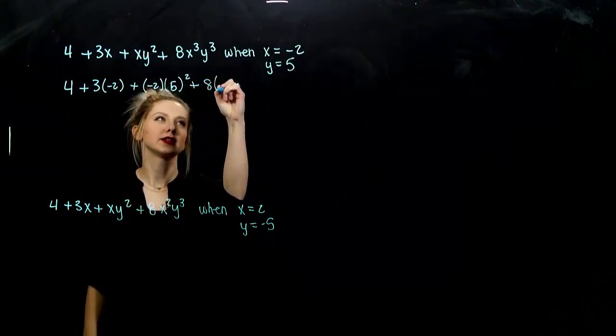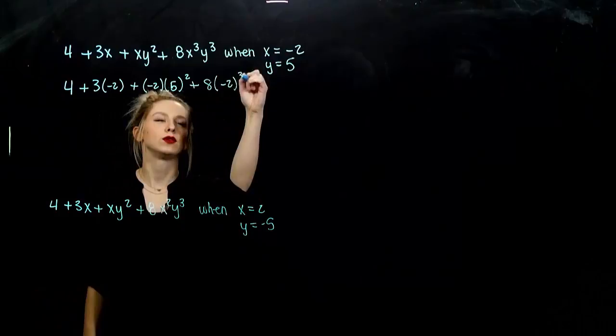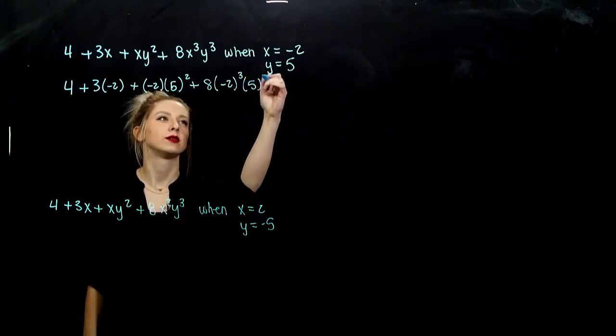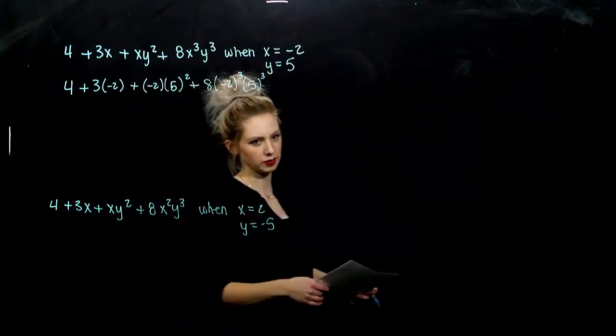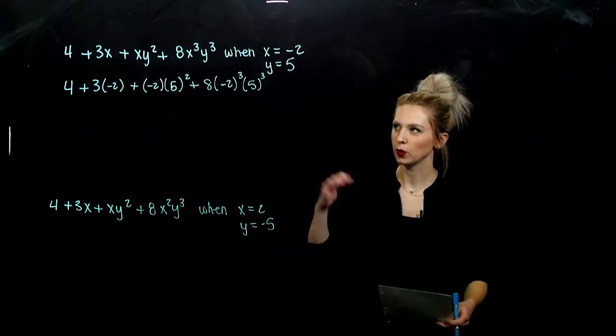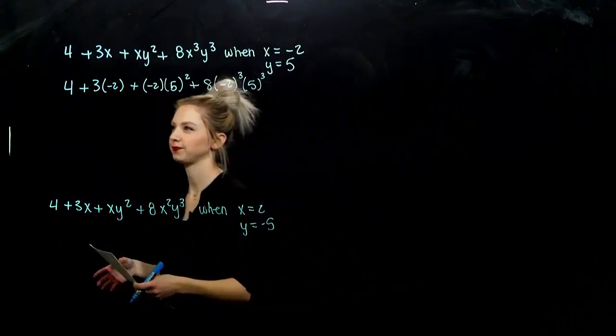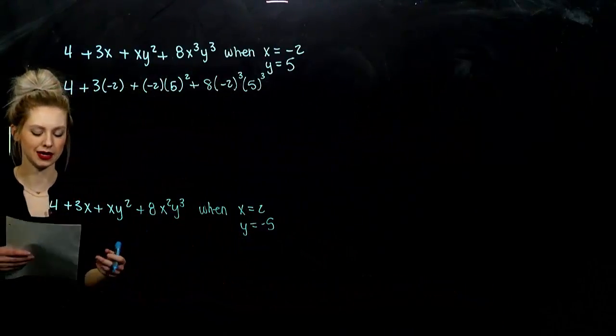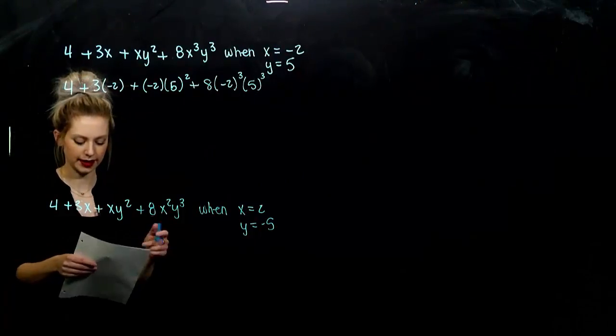Adding to that 8, x value is negative 2, y value 5. Wherever we see an x, we plug in negative 2. Wherever we see y, we put in 5.